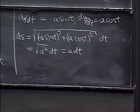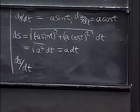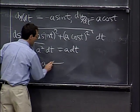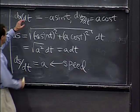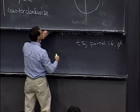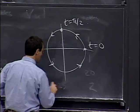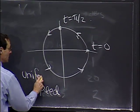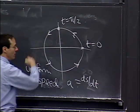We can also write the rate of change of arc length with respect to t, which is a in this case. This gets interpreted as the speed of the particle going around. Not only is the direction counterclockwise, but the speed is uniform — constant speed — and the rate is a. So that's ds/dt traveling around.